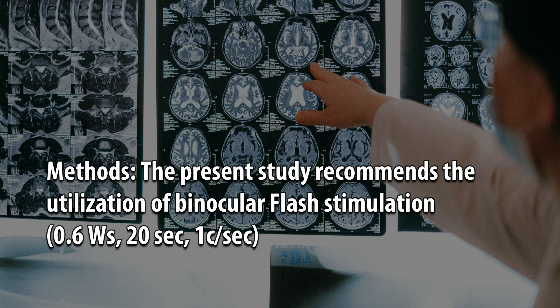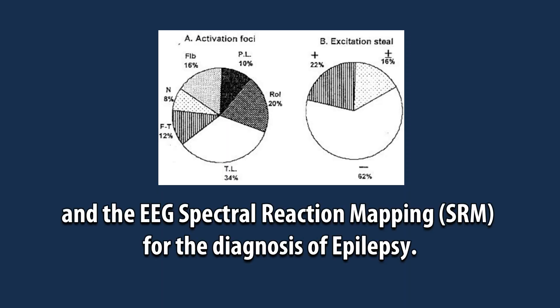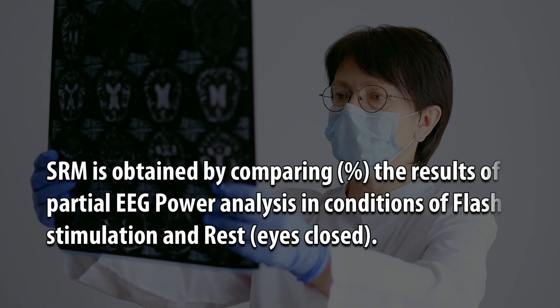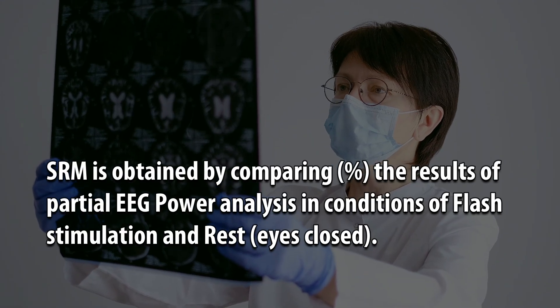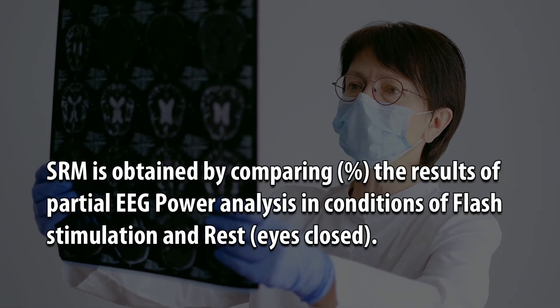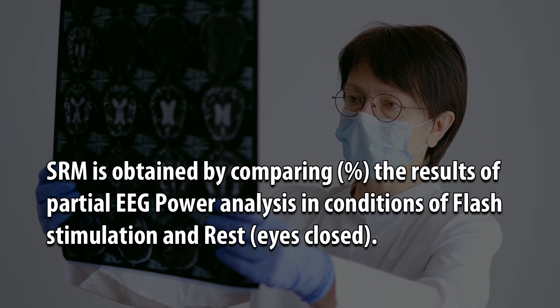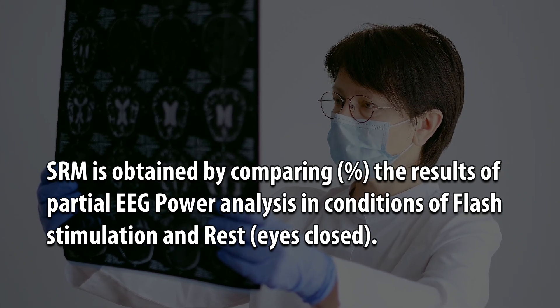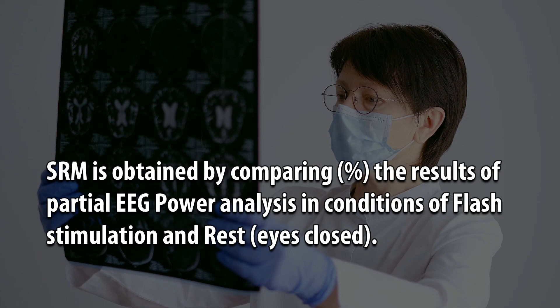Methods: The present study recommends the utilization of binocular flash stimulation and the EEG Spectral Reaction Mapping for the diagnosis of epilepsy. SRM is obtained by comparing the results of partial EEG power analysis in conditions of flash stimulation and rest, eyes closed.